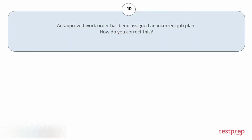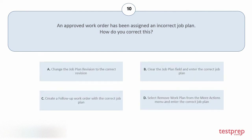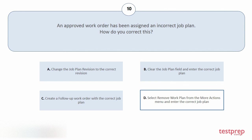Question number 10: An approved work order has been assigned an incorrect job plan. How do you correct this? Your options are: a) Change the job plan revision to the correct revision. b) Clear the job plan field and enter the correct job plan. c) Create a follow-up work order with the correct job plan. d) Select 'Remove Work Plan' from the More Actions menu and enter the correct job plan. The correct answer is option d.